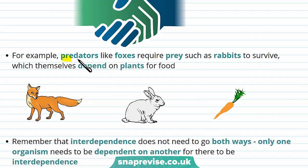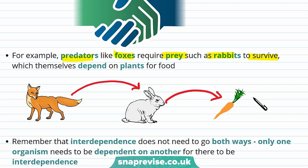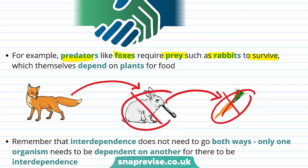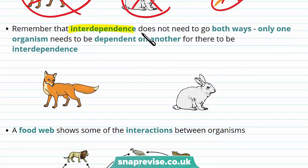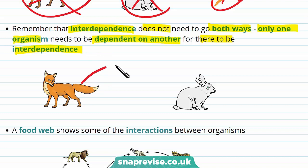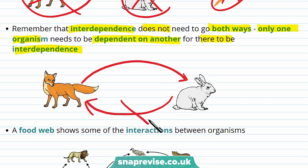For instance, predators such as foxes require prey such as rabbits to survive. If foxes didn't have rabbits to eat, they would die. Rabbits themselves also rely on plants for food — if they didn't have these plants, the rabbits would die, which in turn would cause the foxes to die as well. It's important to remember that interdependence doesn't need to go both ways: only one organism needs to be dependent on another. For example, a fox relies on a rabbit for food and is therefore interdependent, but a rabbit may not rely on a fox — and yet there is still interdependence.